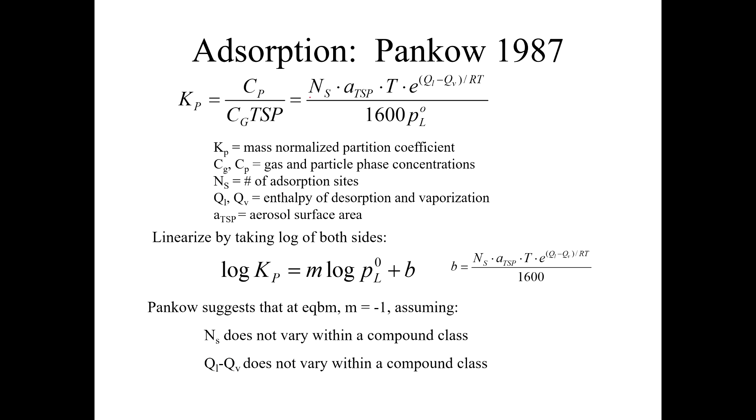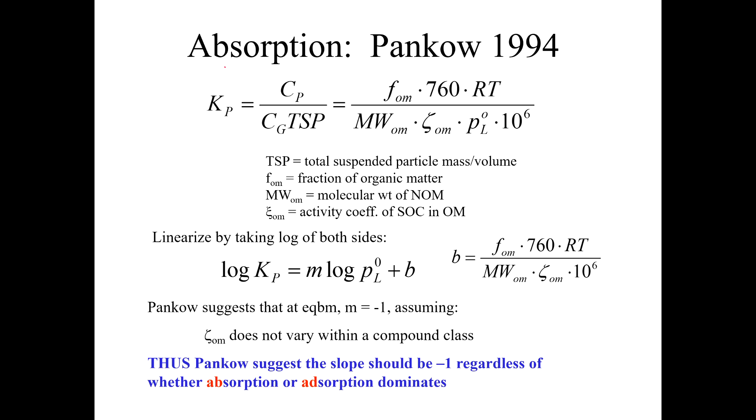Pankow had this big ugly equation for explaining what happens to Kp, and it's a function of the sub-cooled liquid vapor pressure. The point of this slide is just that all this other stuff could probably be assumed to be constant. So you could just linearize this, you get a nice straight line, log of Kp equals some slope times the log of vapor pressure plus an intercept. Pankow, looking at this equation, suggested that at equilibrium this slope should be minus one. Oddly, in the same token, that was adsorption. But for absorption, you get the same thing. Kp is a function of vapor pressure. These things could all be assumed to be constant. So you can linearize it. Looking at all this information, Pankow also suggested that the slope should be minus one at equilibrium. So it doesn't really help you to know what the slope is to, it won't help you figure out whether you're looking at absorption or adsorption because the slope will be minus one regardless.